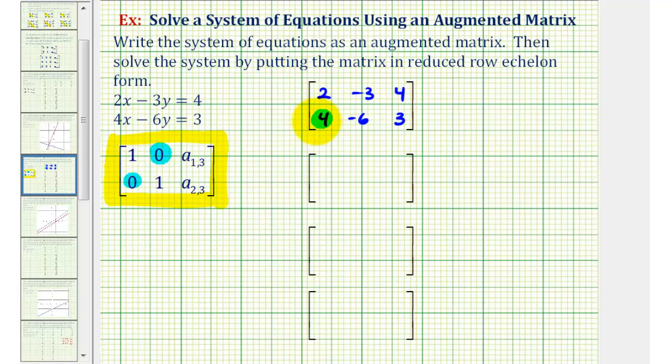So for the first step, we're going to replace row two with negative two times row one. Notice by performing this row operation, we'll have a zero in row two, column one. So the first row stays the same.